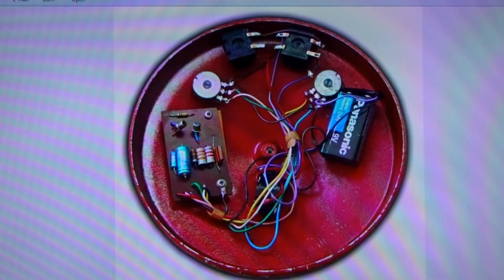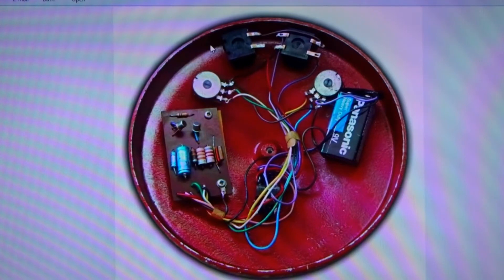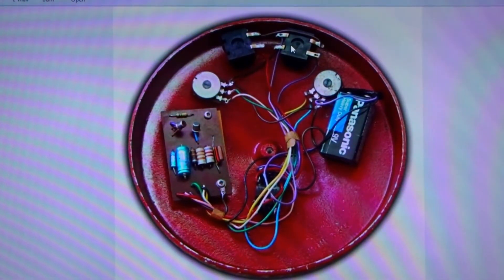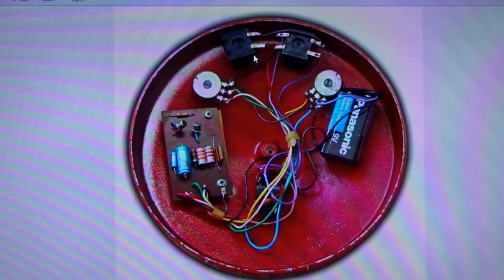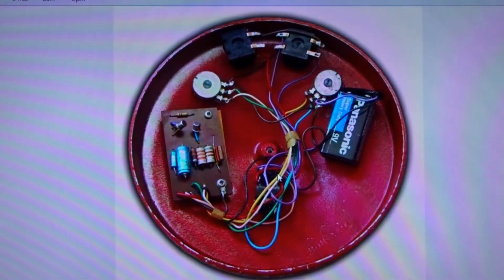Up here we have some quarter inch TSR mono female input/output jacks. Over here we got a battery, over here we have a double pole double throw footswitch to turn it off and on, and then this is our circuit board.